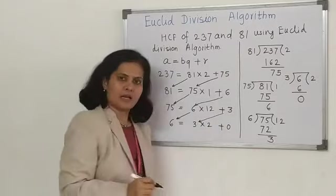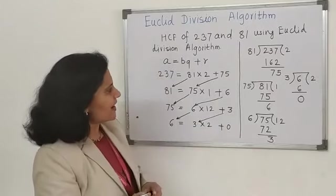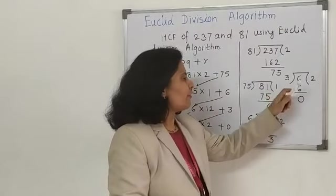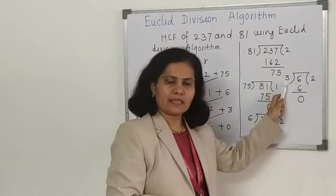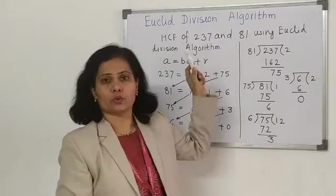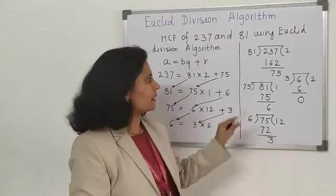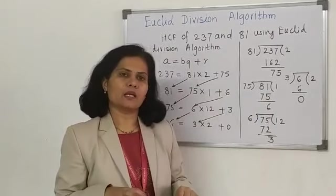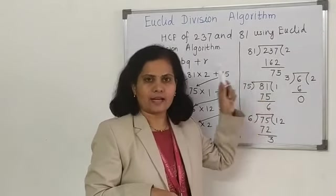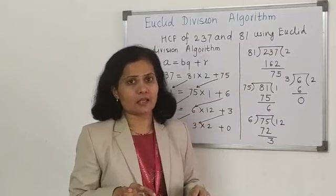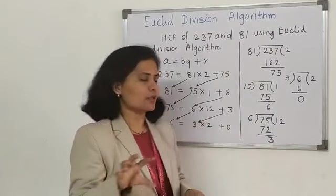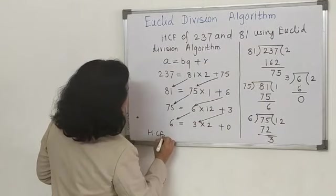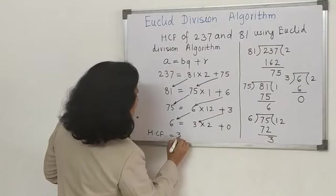Now, at the step when we are getting remainder as 0, the value of divisor will be the HCF of those particular numbers. In this case, the HCF is equal to 3.